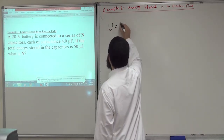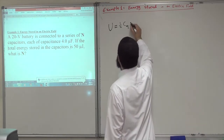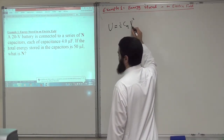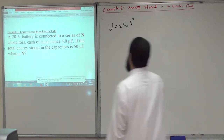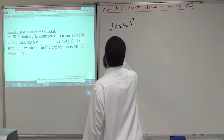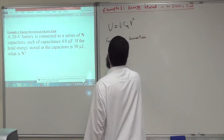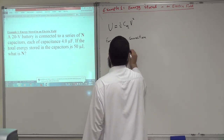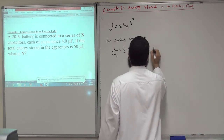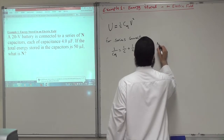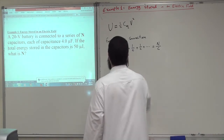The total energy stored equals one half C-equivalent multiplied by V squared, because this potential is applied across the equivalent capacitance of N capacitors. For series connection, 1 over C-equivalent equals 1 over C1 plus 1 over C2, and since all capacitors are identical, this gives N over C, so C-equivalent equals C over N.